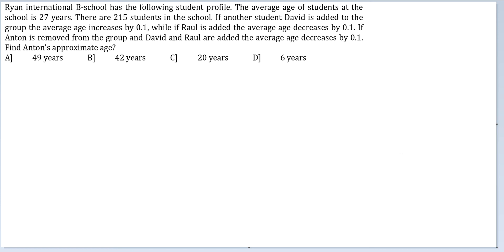If another student, David, is added to the group, the average age increases by 0.1. While if Rahul is added, the average age decreases by 0.1. If Anton is removed from the group and David and Rahul are added, the average age decreases by 0.1. Find Anton's approximate age.